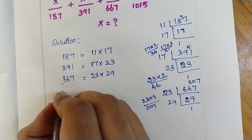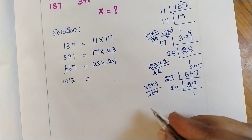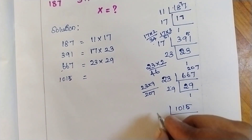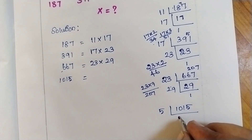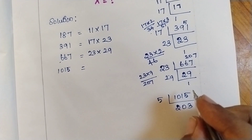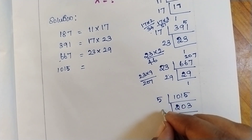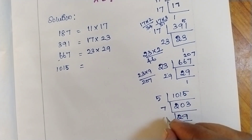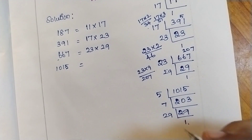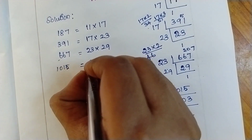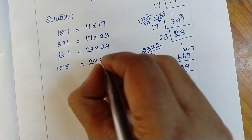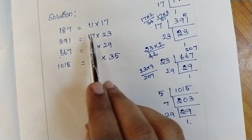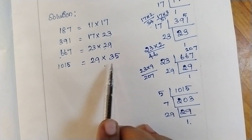Similarly we need to find the multiples of 1015. By seeing this number itself we can know that it has 5 as a multiple. It comes in the 5 table — 2 fives are 10. Again it will come in the 7 table — 2 sevens are 14, balance 6, 9 sevens are 63 — so it comes in the 29 table. So the multiples of 1015 are 29 into 7 into 5, which is 29 into 35. So if we see: 11×17, 17×23, 23×29, 29×35 — this is in a chain format.